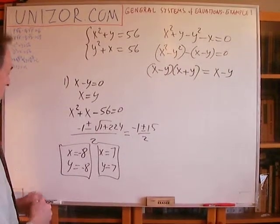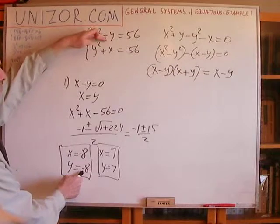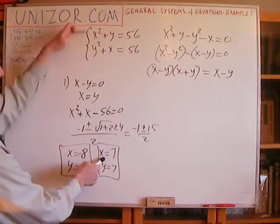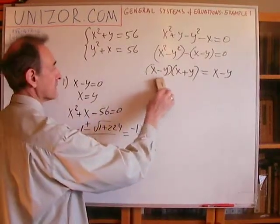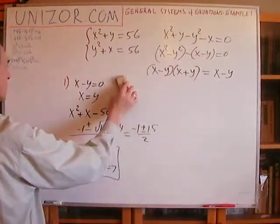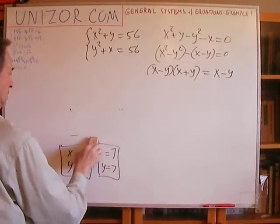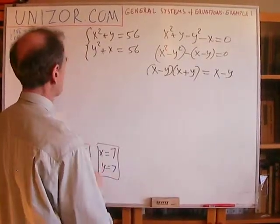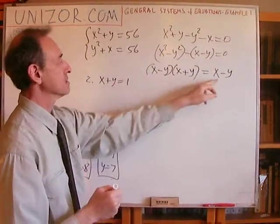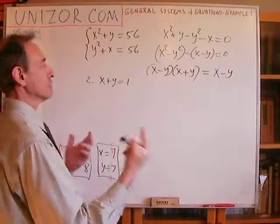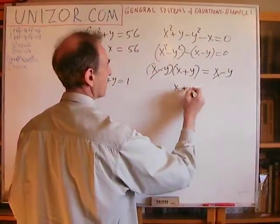Let's verify: 8 squared is 64, minus 8 gives 64 minus 8 equals 56. Correct. And 7 squared is 49 plus 7 equals 56. Correct. So we have two solutions from the X equals Y case. Now for the other case: if X minus Y is not zero, we can divide through and get X plus Y equals 1.